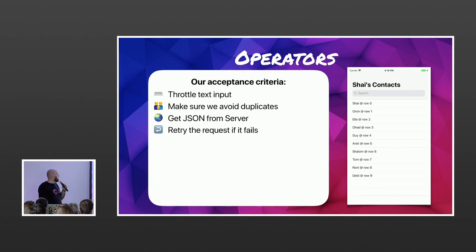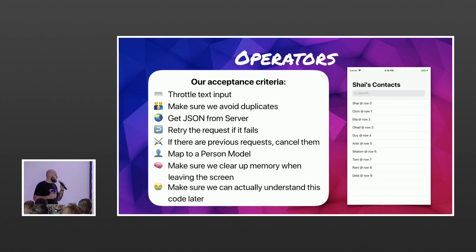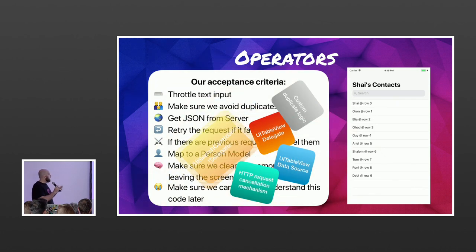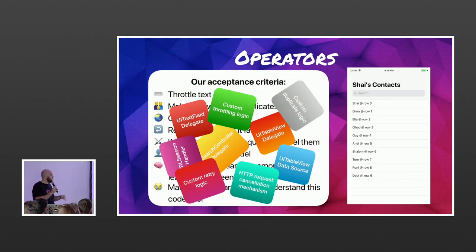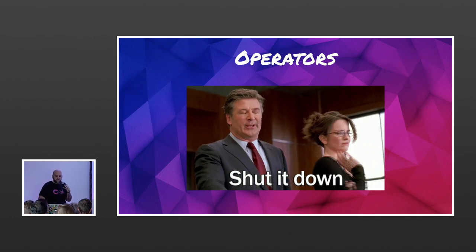We want to get JSON from the back end, retry if the request fails, cancel any ongoing previous requests to keep only the latest, map the response to a JSON model, clear up memory when leaving the screen, and keep the code readable in a concise manner. You can imagine the amount of code this would involve imperatively — custom throttling, retry, duplicate logic — it would be a gigantic, painful, hard-to-maintain piece of code. So let's not do that.